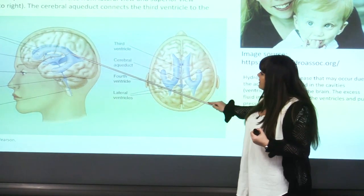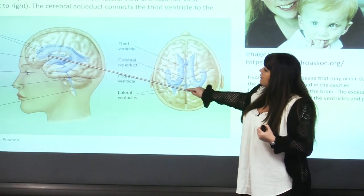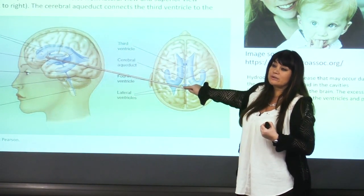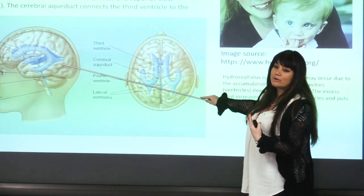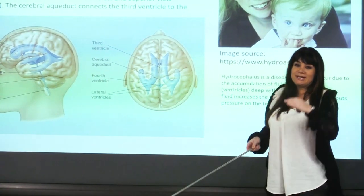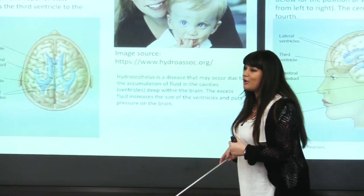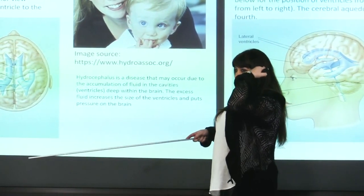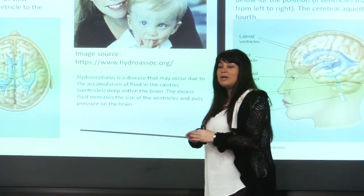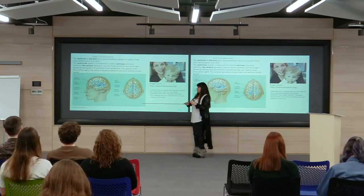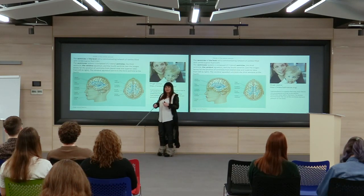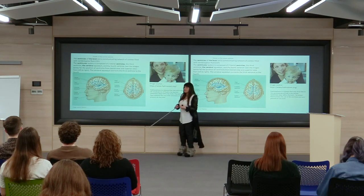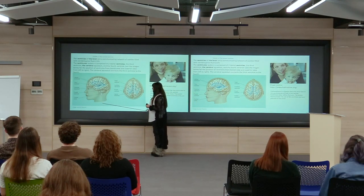The largest part is the lateral ventricle, which extends to the frontal part of the brain — this extension is called the frontal or anterior horn of the lateral ventricle. The back part is called the posterior horn, and there is also an inferior horn. We frequently use terms like anterior, posterior, and inferior to define structures according to neighboring structures — in front, behind, or on the side.